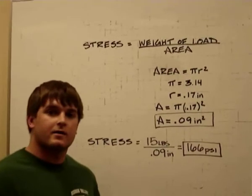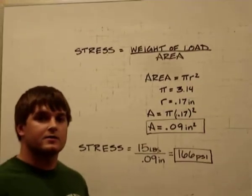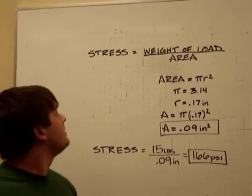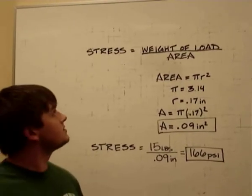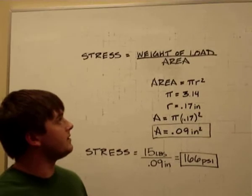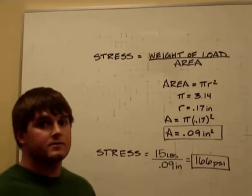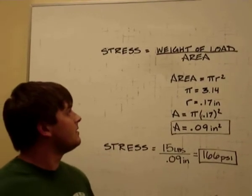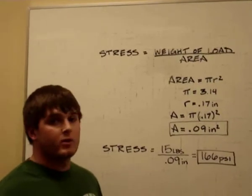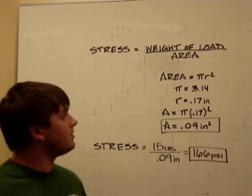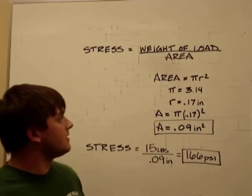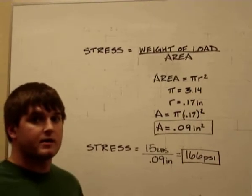We're going to use the numbers that we found in our demonstration to calculate Young's modulus of elasticity. First, we need to find the stress. The stress is the weight of the load over the area. To find the area, we use the formula pi r squared, with pi equaling 3.14 and our radius 0.17 inches. That gives us an area of 0.09 inches squared.